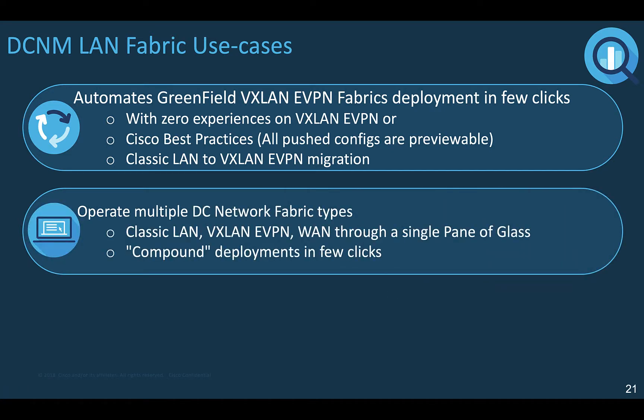DCNM automates the deployment of a VXLAN EVPN easily based on Cisco best practices, with the option to preview the configuration for subject matter experts who can follow the configurations.